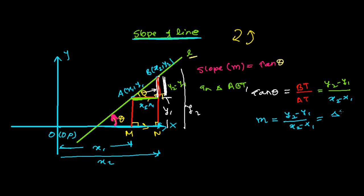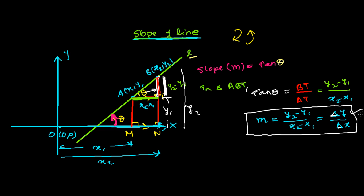So finally, the slope m equals (y2 minus y1) over (x2 minus x1), or delta y over delta x, where delta means the difference. The slope is the difference in the y-coordinate over the difference in the x-coordinate. In other words, the slope of a line is the tangent of the inclination, or the ratio of the change in y over the change in x — how the y-coordinate is changing with respect to the x-coordinate along the line.